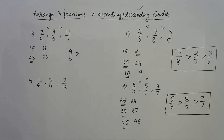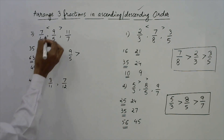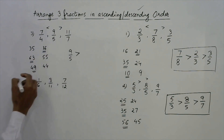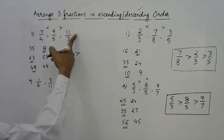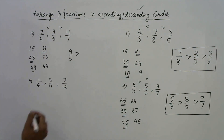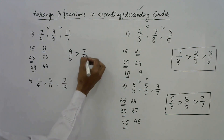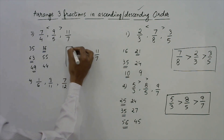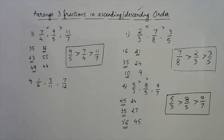Now the third comparison is straightforward. 7 and 7 give 49, and 11 and 4 give 44. So on the left side we have the larger product, meaning 7/4 is greater than 11/7. So the final descending order is: 9/5 is the greatest, followed by 7/4, followed by 11/7.